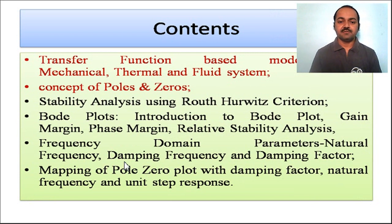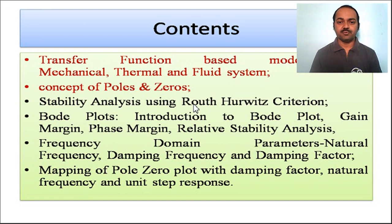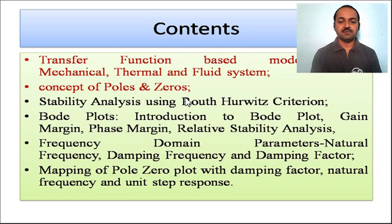In the previous part, we saw how to make a mathematical model for any mechanical, thermal, or fluid system — getting the relationship between the output and input. When we obtain the transfer function, it has a polynomial term in the numerator and one in the denominator. The numerator polynomial terms are called zeros and the denominator polynomial terms are called poles of the transfer function.